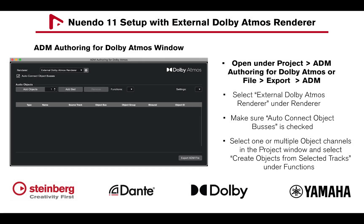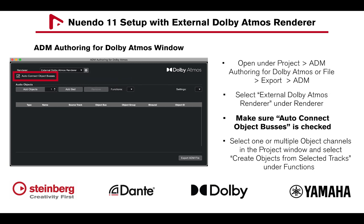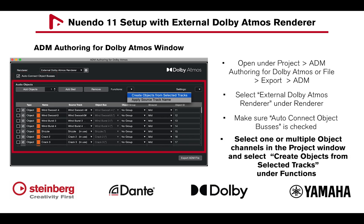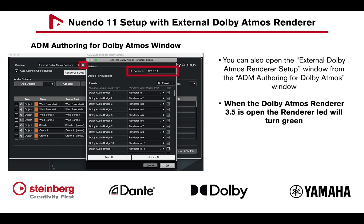Open the ADM Authoring for Dolby Atmos window under Project, or File Export ADM, and select External Dolby Atmos Renderer under Renderer. Make sure Auto Connect Object Buses is checked for automatic connections. You can now select one or multiple object channels in the project window and create objects from selected tracks using their functions. The External Dolby Atmos Renderer Setup window can also be opened from the ADM Authoring window by clicking the Renderer Setup icon. A green LED should be visible when the External Dolby Atmos Renderer is connected.